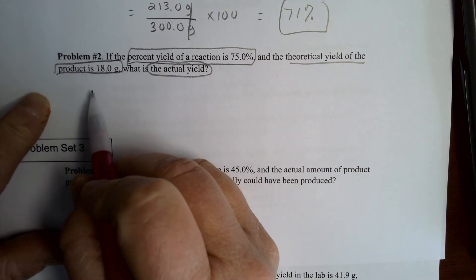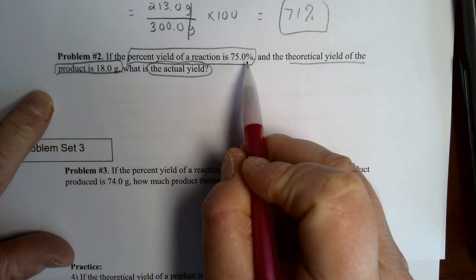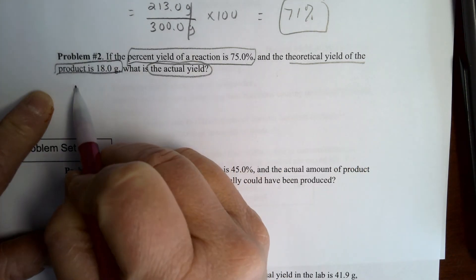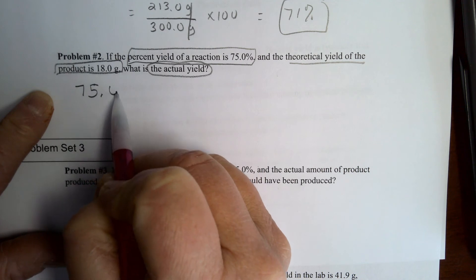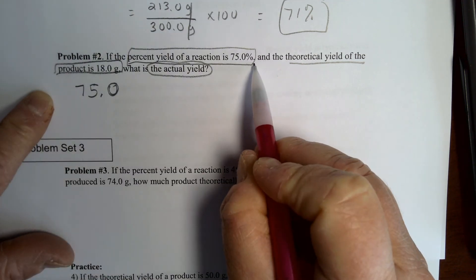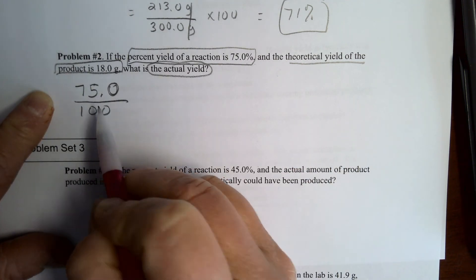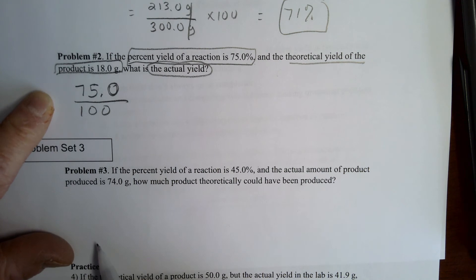So in this case, when you are given the percent yield, we are going to start with 75.0, and because it's percent, that means it is over 100. 75% is just 75 over 100, so that's our percent yield.